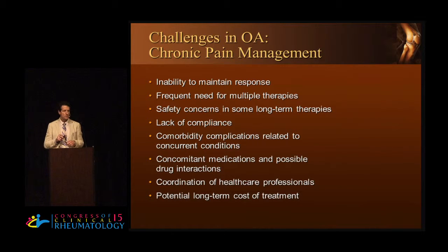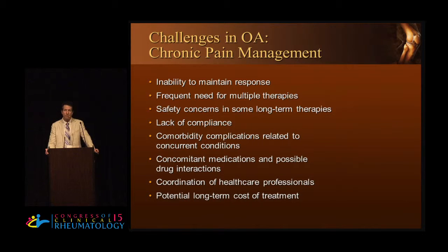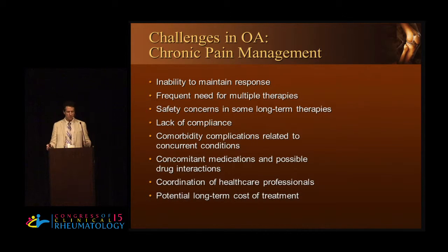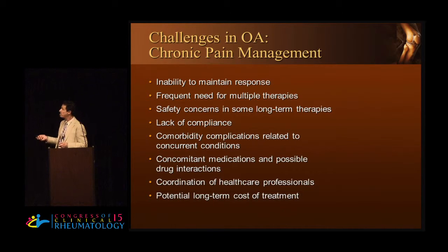The challenges we have in treating this disease is that it's very difficult — even if you can get an initial response — it can be very difficult to maintain that response, particularly over many months if not years. We usually are using multiple therapies over time, and we have safety concerns related to this. There's a lot of lack of compliance, a lot of comorbidities and complications. We're using concurrent medications, some of which may be somewhat dangerous, solely and also because of their interactions. It also takes coordinating health care providers, including physicians, advanced practitioners, therapists, and surgeons. And then there's also the long-term potential cost of the disease, which over many years — considering everything we can do that may ultimately wind up with a patient having a total joint replacement — is clearly a very costly situation.